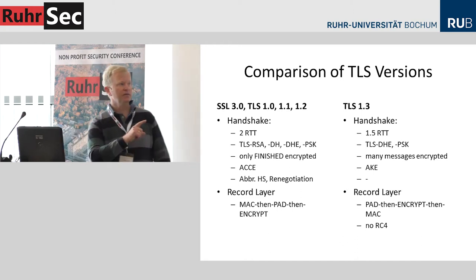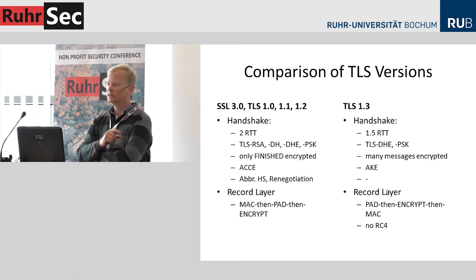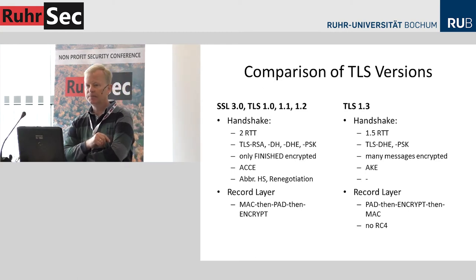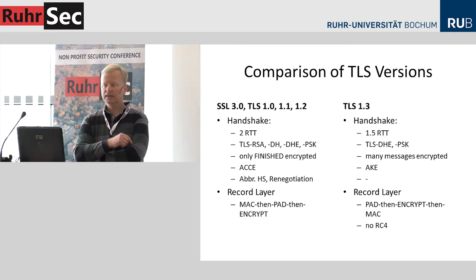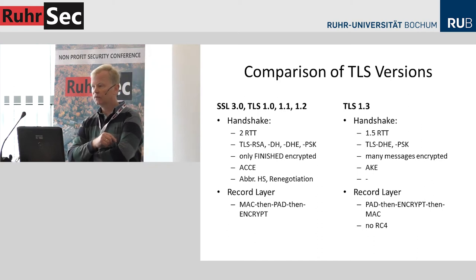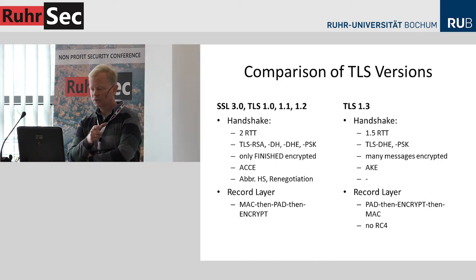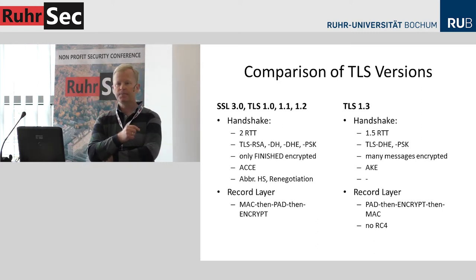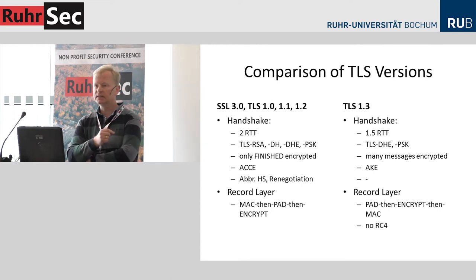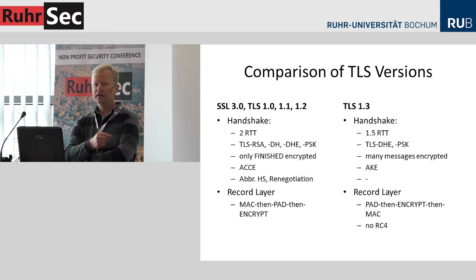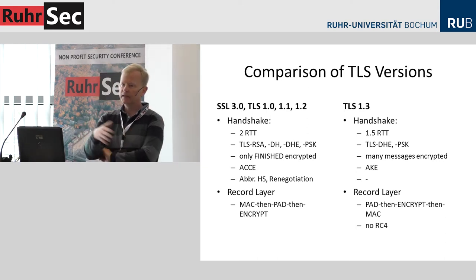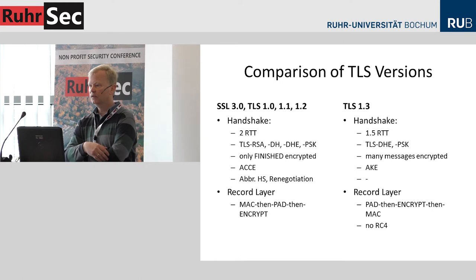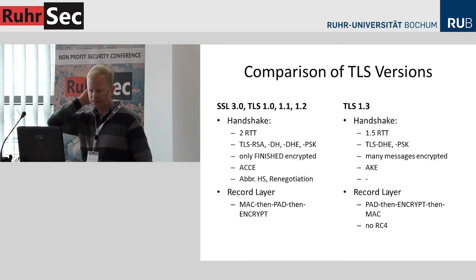The record layer was the focus of many high-profile attacks: Poodle, Crime, Beast, and Lucky 13. These succeeded because TLS used a strange construction called MAC-then-PAD-then-ENCRYPT. This will be changed to PAD-then-ENCRYPT-then-MAC, which should eliminate all these attacks from the past few years.